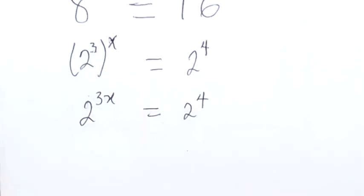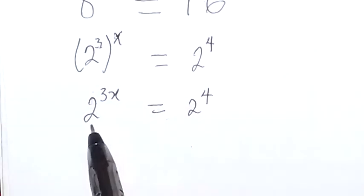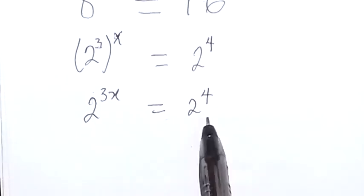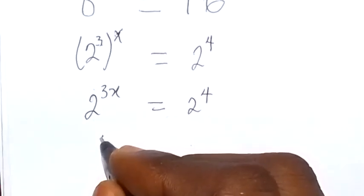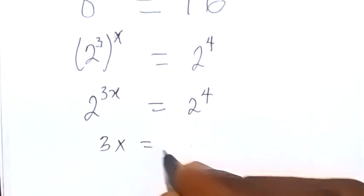And since the bases are the same on the left and the right, we can equate the powers. So we can say 3x here now equals to 4.